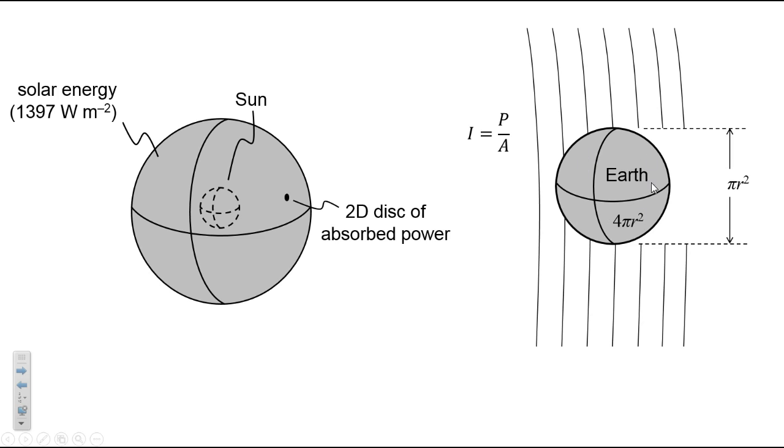actually has to be spread out across four times the area. So to find the true intensity for every square meter on the spherical Earth, we divide this number by four to arrive at around 349 watts per square meter of the entire planet.